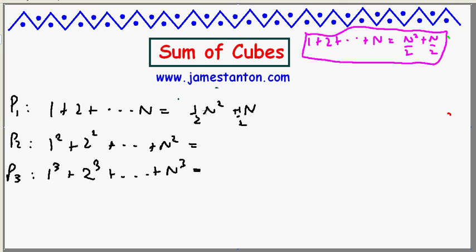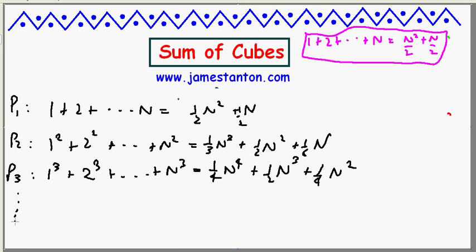P3 is the sum of the first n cubed numbers, and we've established it is the triangle number squared. If you expand it out, and I'm just going to save some time because I've already expanded out on a side piece of paper, it's one fourth n to the fourth plus one half n cubed plus one fourth n squared.